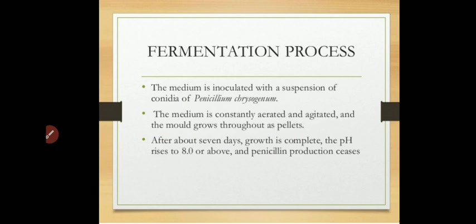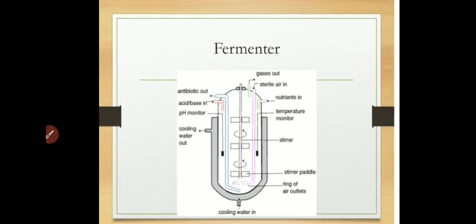The process is continued for about seven days. During these seven days, the growth of Penicillium chrysogenum is completed and the pH of the fermenter rises to eight or above. At this pH, penicillin production is completed — when the pH reaches eight, penicillin production stops, indicating that the process has been completed.